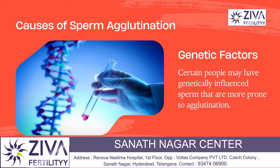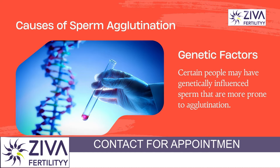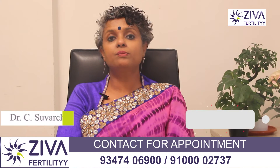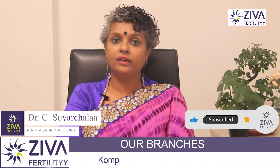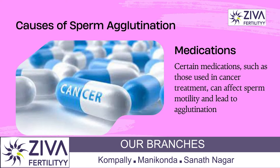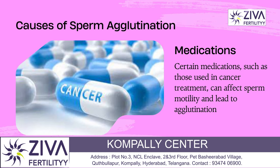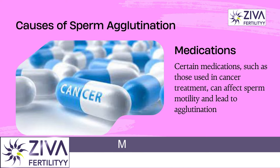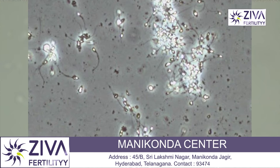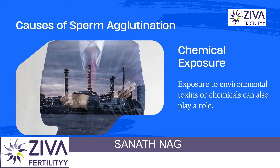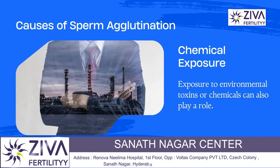There are some genetic factors also responsible for this. Some individuals may have genetic predispositions that make their sperm more likely to agglutinate. Certain medications and chemical exposures can also cause agglutination, such as those used in cancer treatment. They can affect sperm motility and lead to agglutination. Exposure to environmental toxins or chemicals can also play a role.